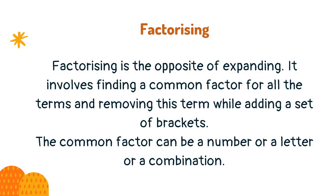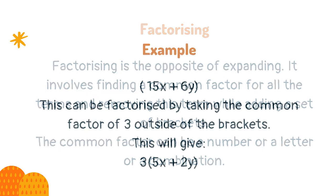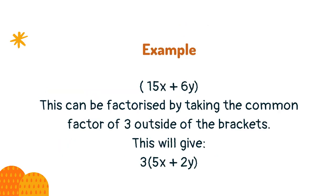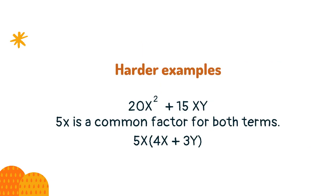The common factor can be a number, a letter, or a combination. For example, 15x plus 6y can be factorized by taking the common factor of 3 outside of the brackets, giving 3(5x + 2y). A factor can be both a letter and a number, just a number, or just a letter, depending on the question given.